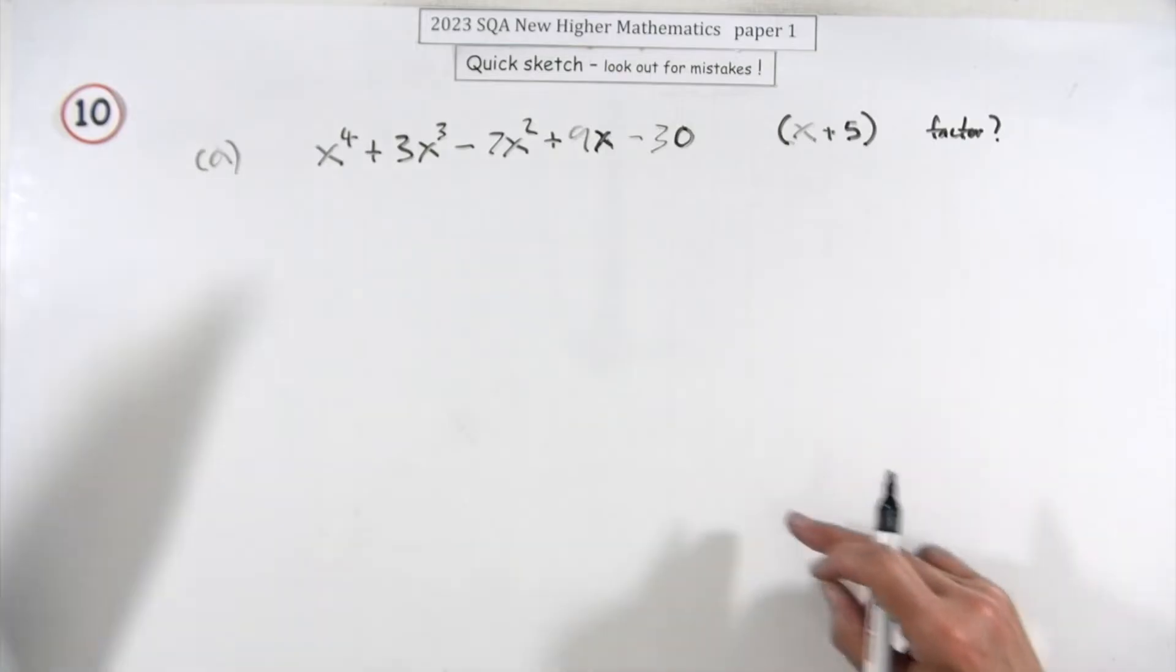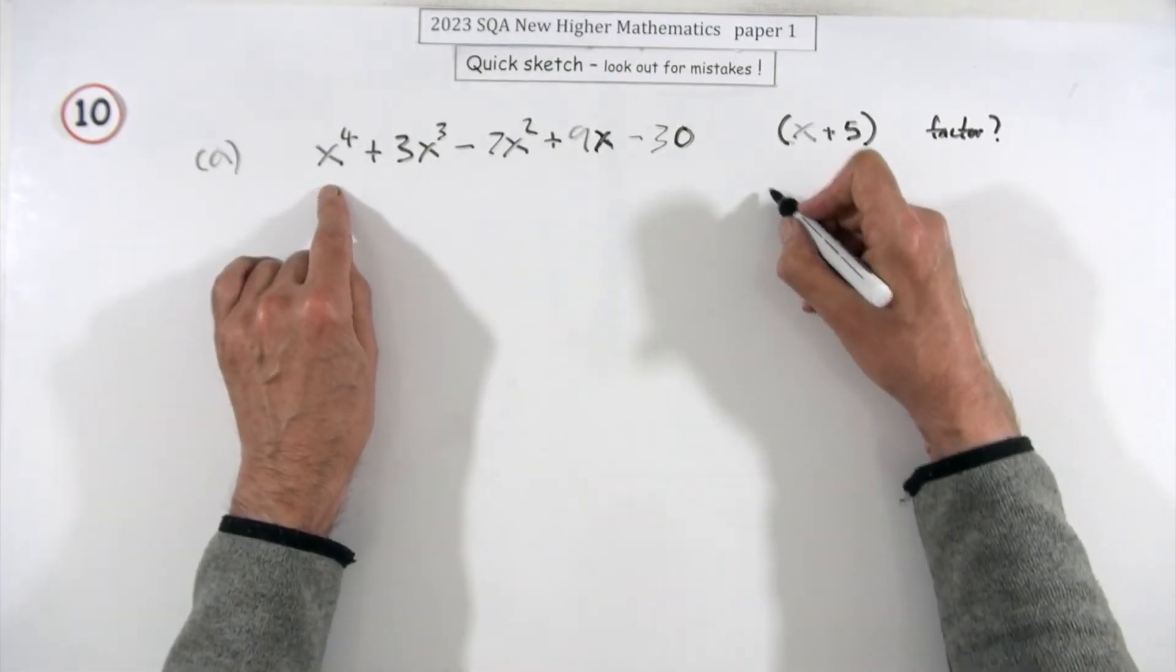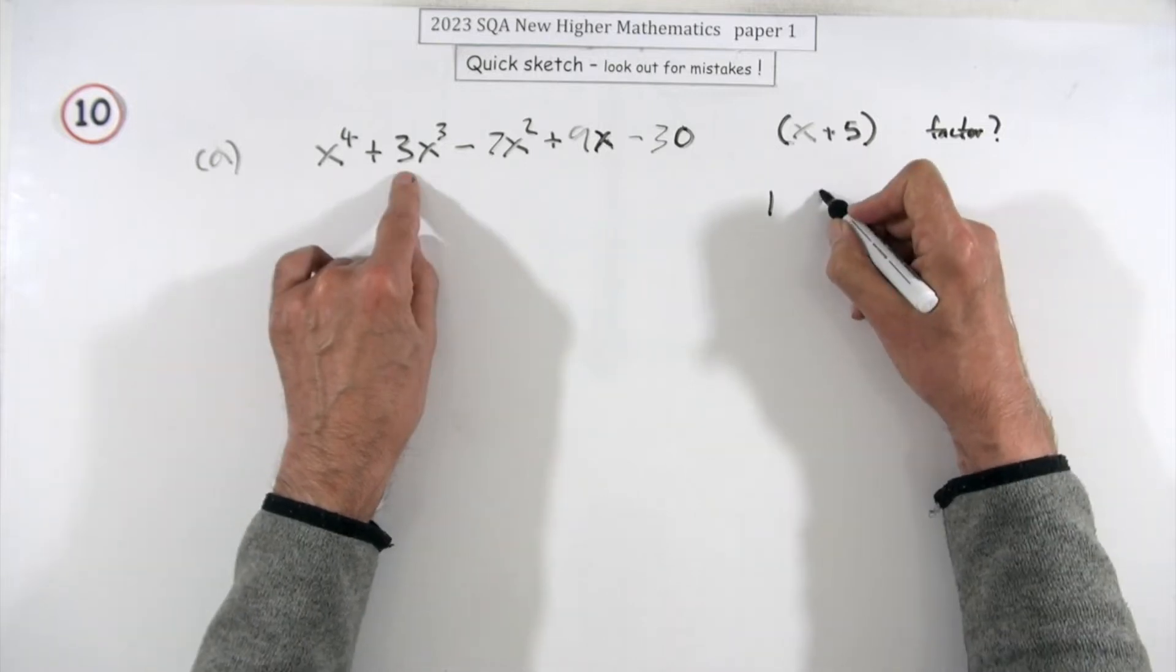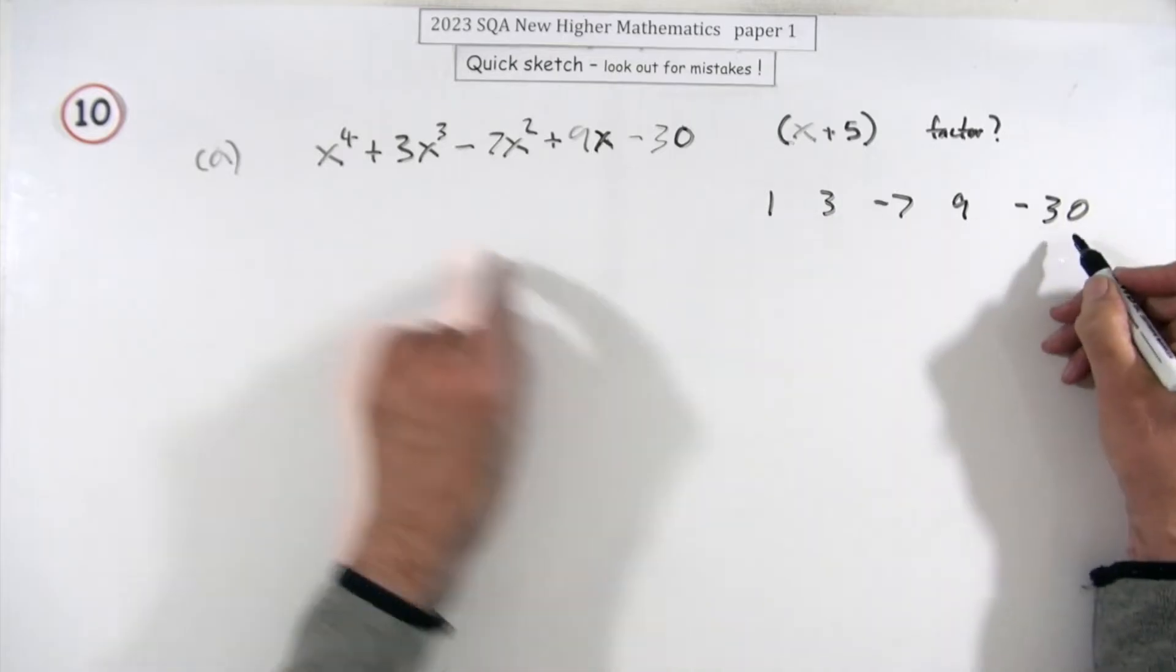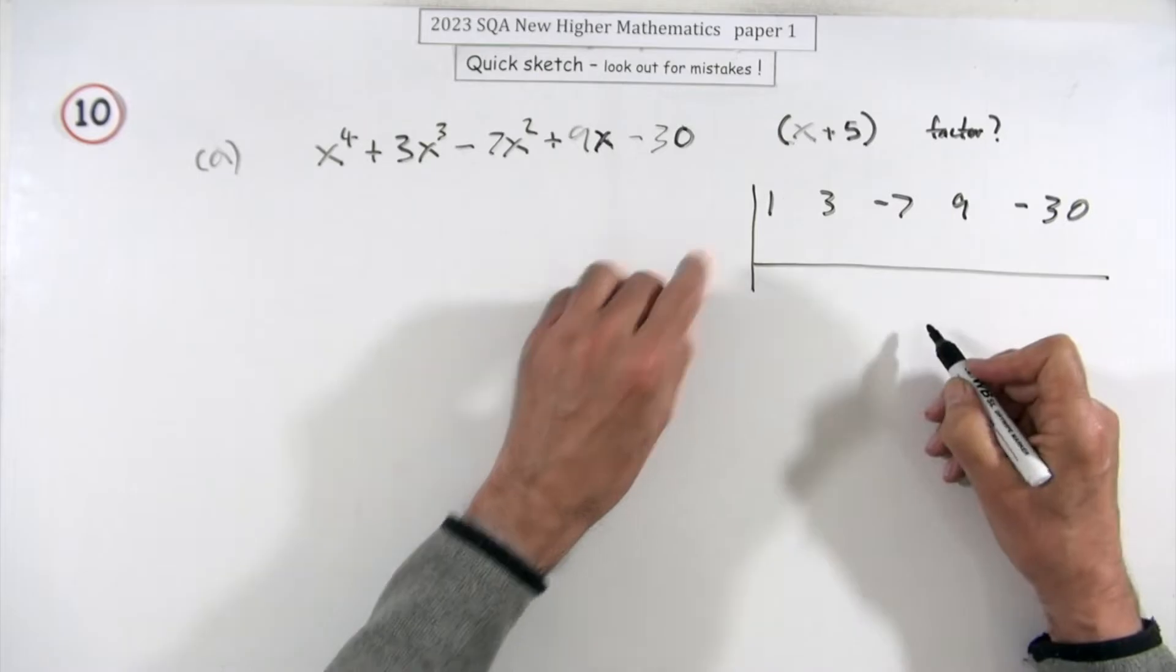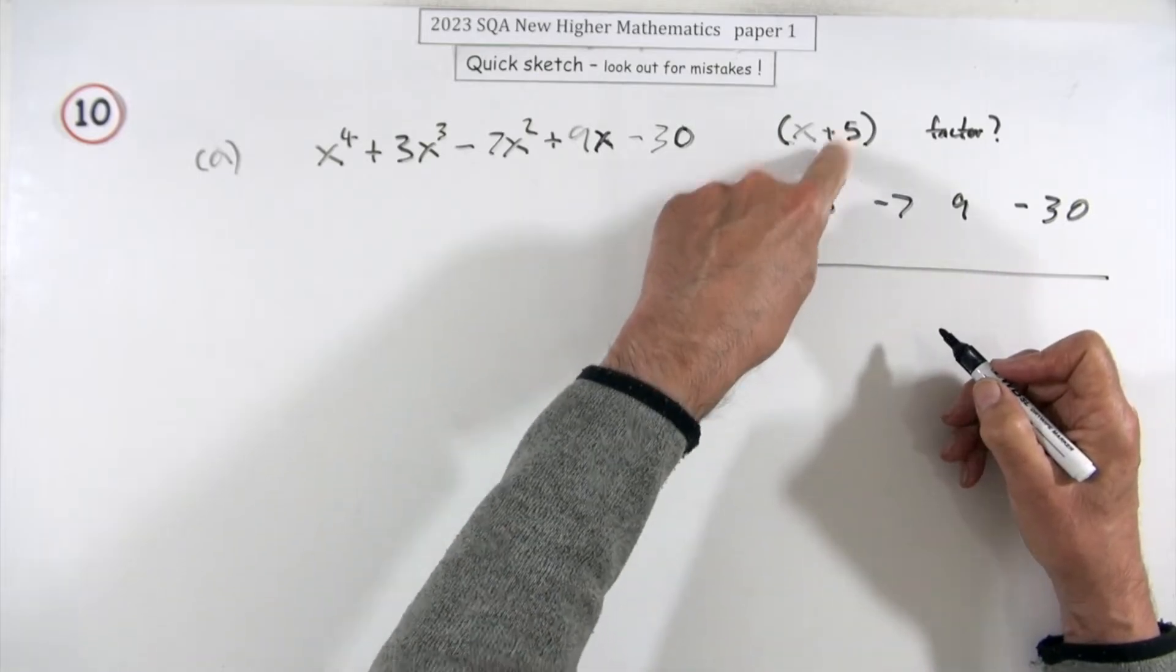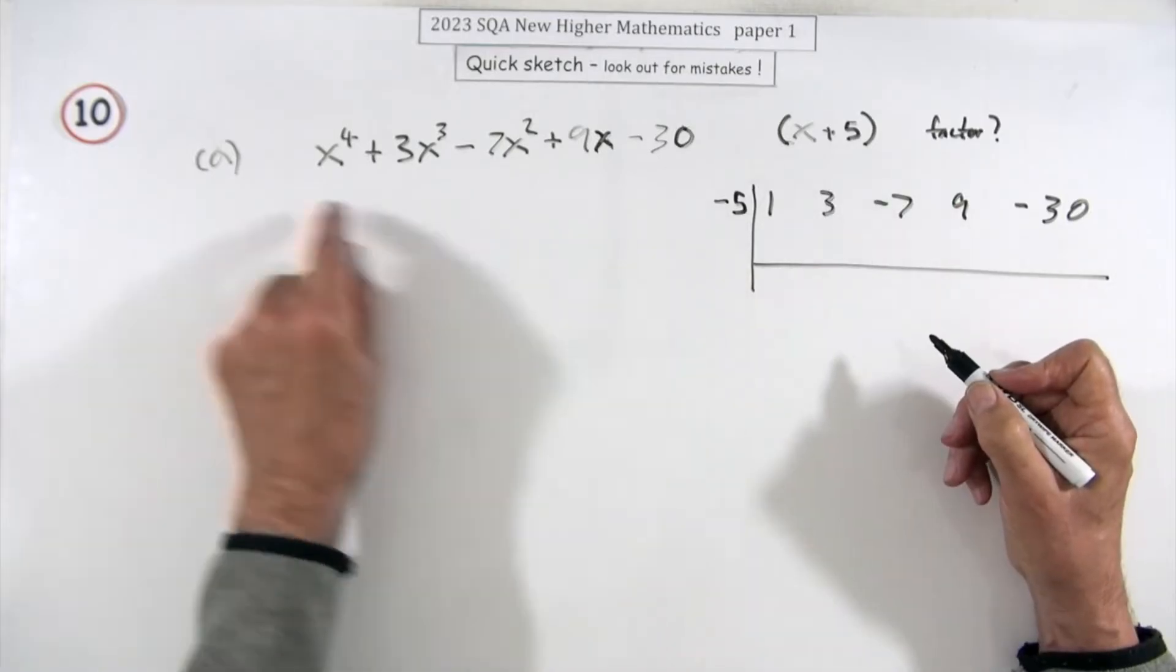Seven marks just for putting these numbers down: one, three, negative seven, nine, negative thirty. There should be five of them and there are five. If x+5 is a factor, negative five should be a root. Negative five should produce the answer zero.